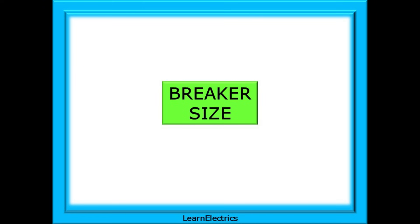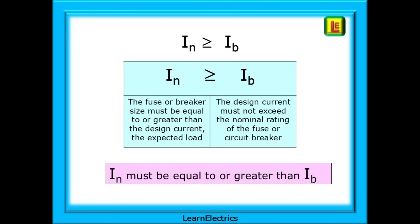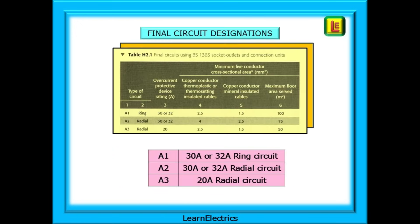Looking at breaker sizes, circuit types, and floor area next. An important rule to follow with any circuit is the relationship between IN and IB. The fuse or breaker size, IN, must be equal to or greater than the design current, IB — the expected load. The design current IB must not exceed the nominal rating of the fuse or circuit breaker. The fuse must always be able to carry the required loads under fault-free conditions. Final circuits are sometimes designated A1, A2, or A3. For a designer, it's easier to write A2 than to write out a radial circuit with a 32-amp breaker wired in 4-square-millimetre copper conductors.